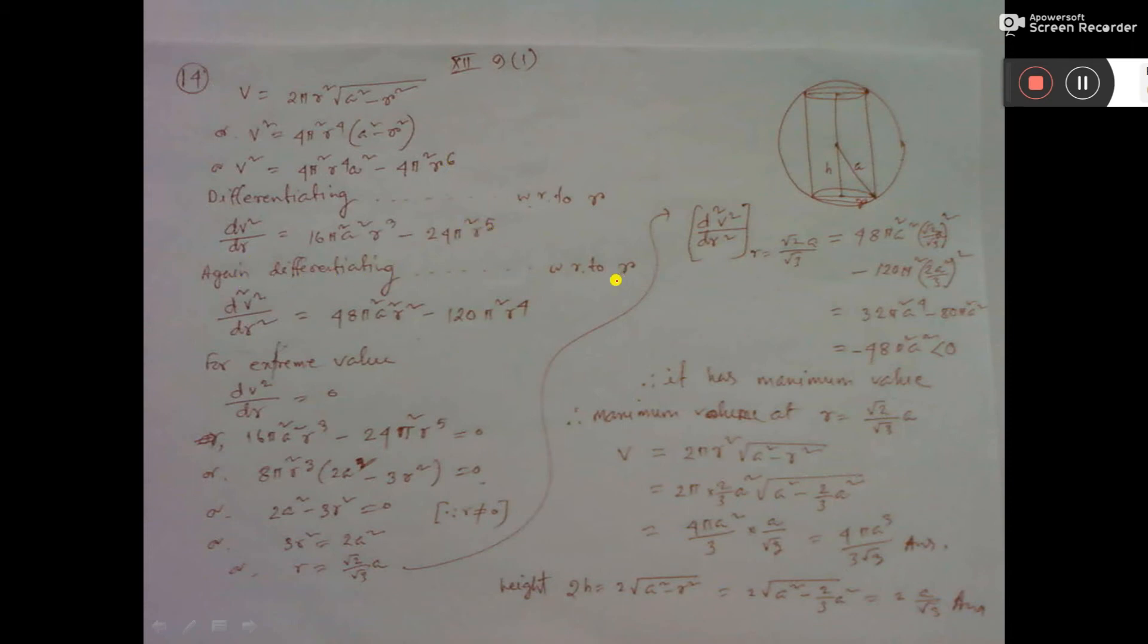Again, differentiating both sides with respect to r. This will be d²/dr² of V². That is d²V²/dr². r³ becoming 3r², and r⁵ becoming 5r⁴.